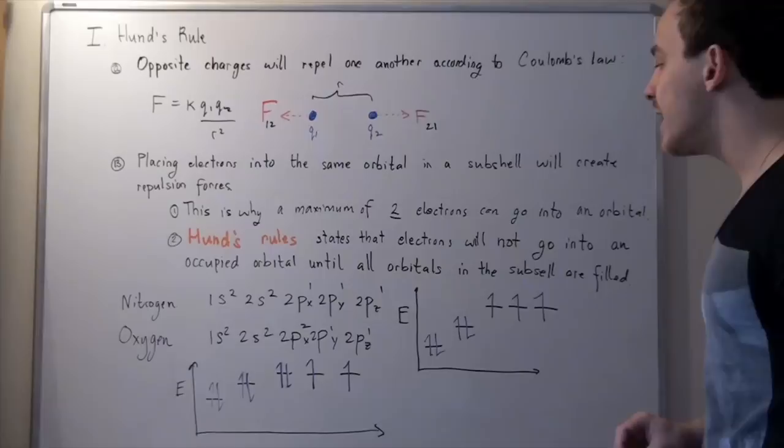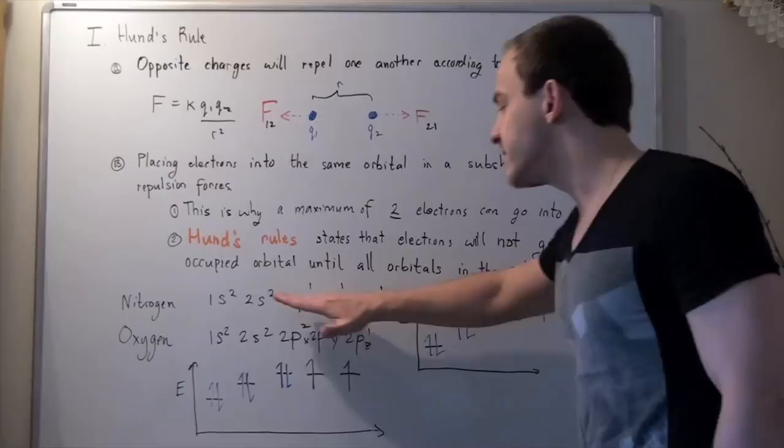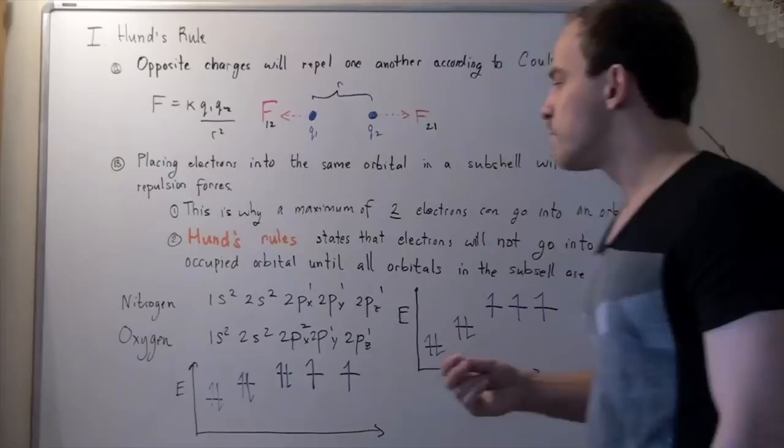And so, the 2s is a bit higher. Likewise, the 2px and the 2px, 2py, and 2pz are higher than either this guy and this guy. That means they will be higher. And these guys are at the same level. So, that means they will be at the same level.